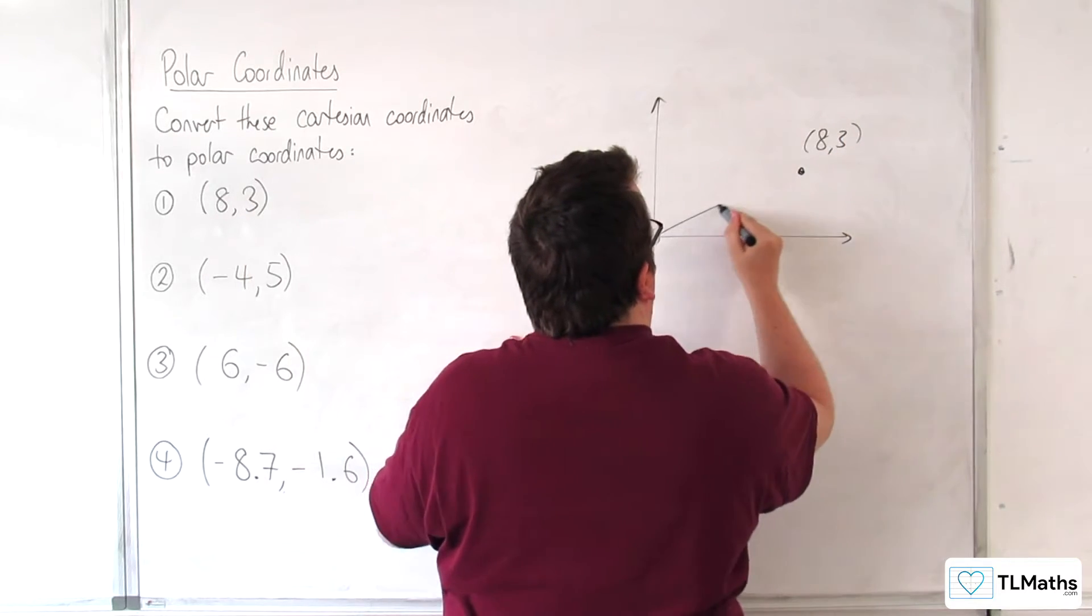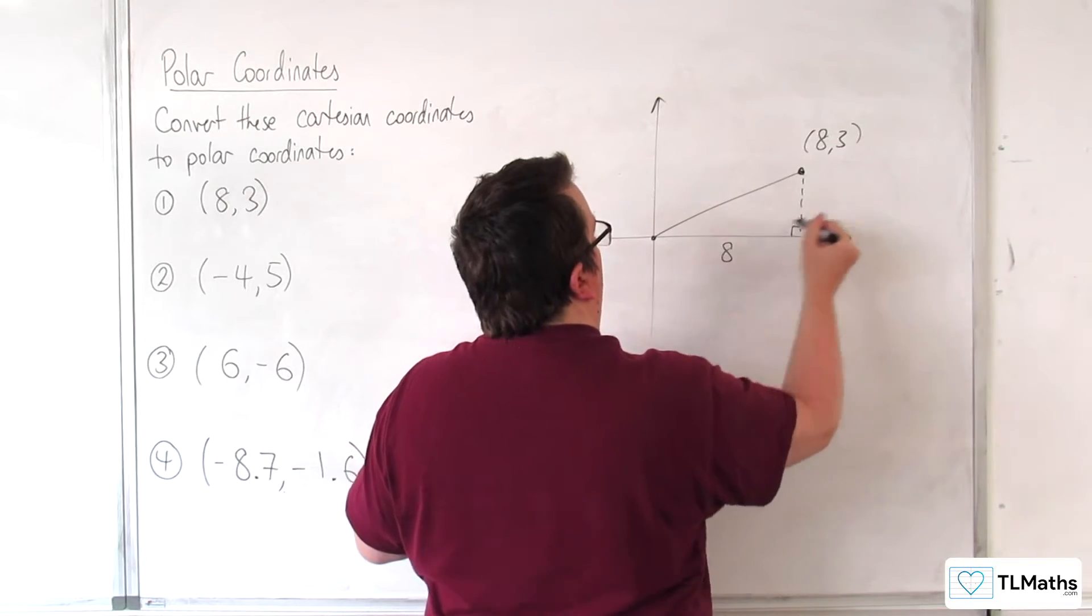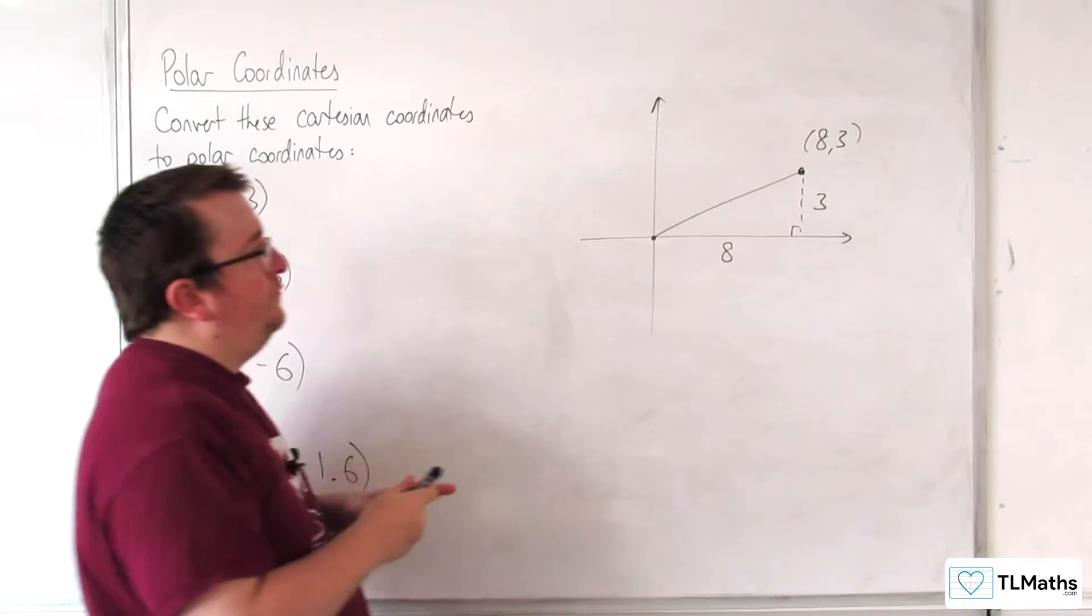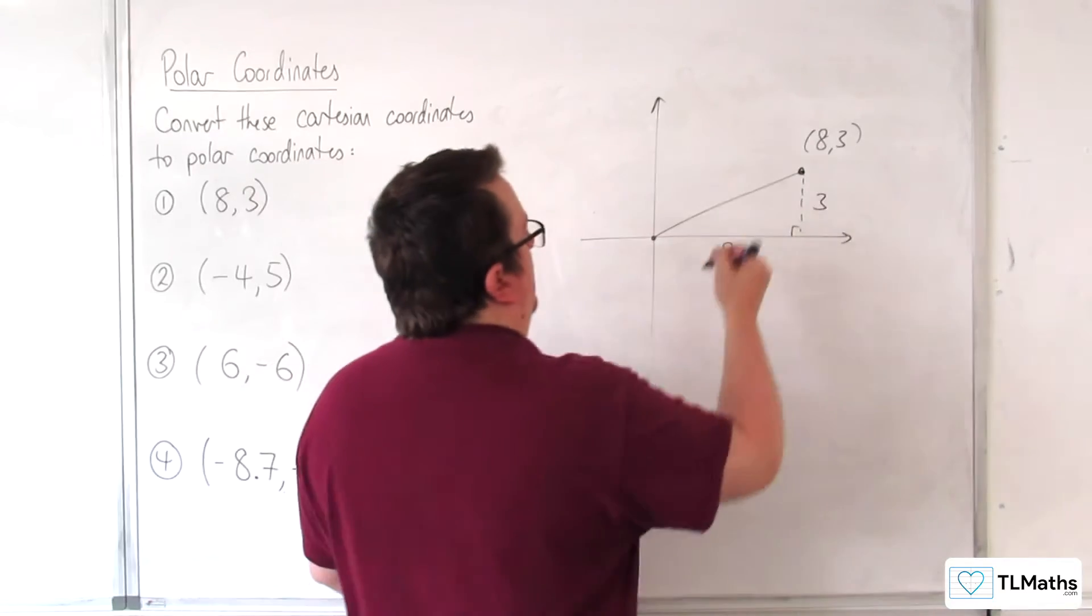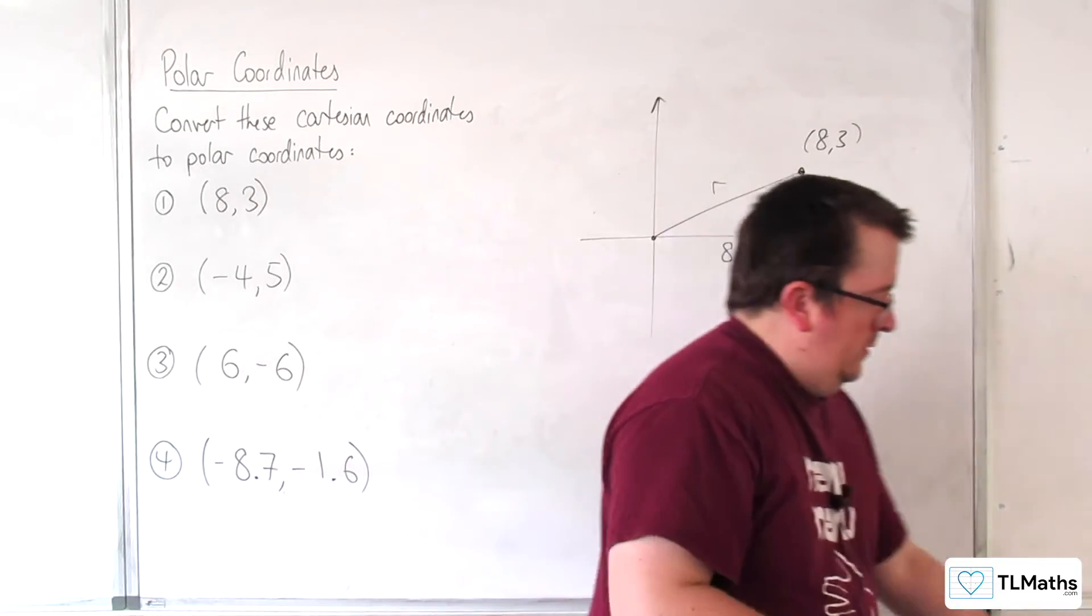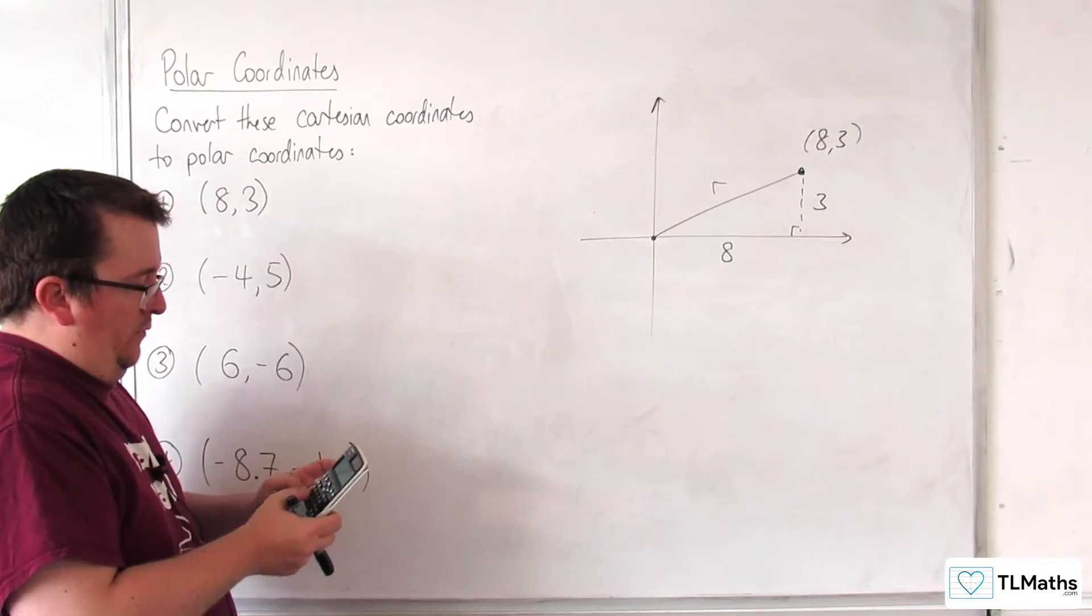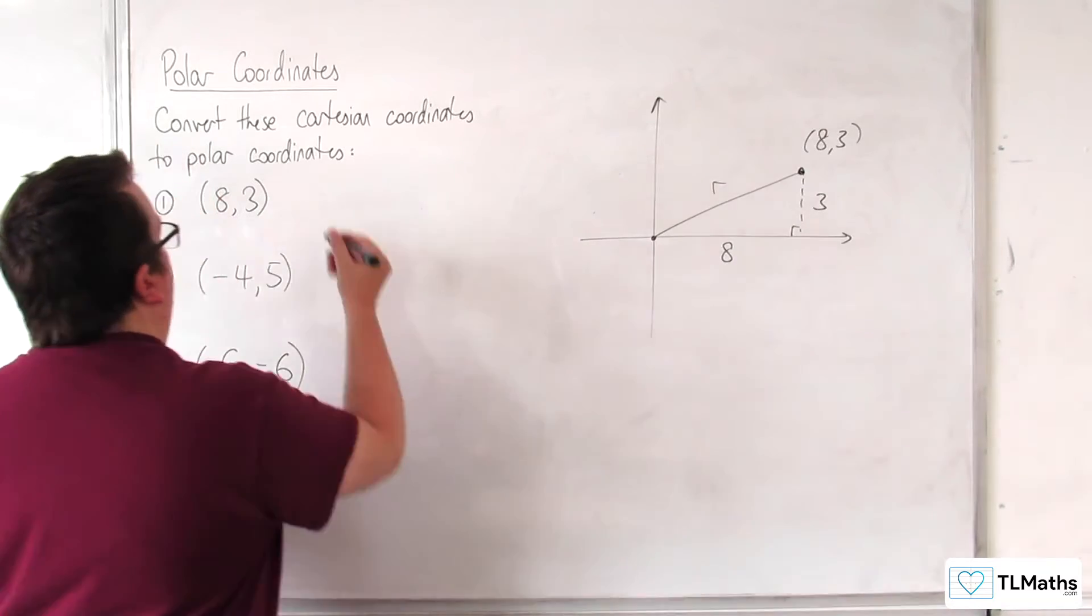Okay, so we've got a right angle triangle, 8 along, 3 up. We can work out the hypotenuse R using Pythagoras. So we've got the square root of 8 squared plus 3 squared, which is root 73.